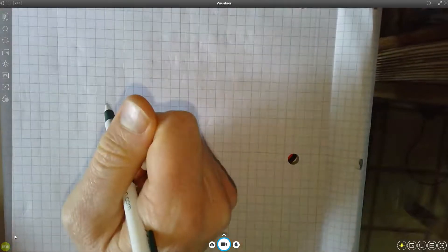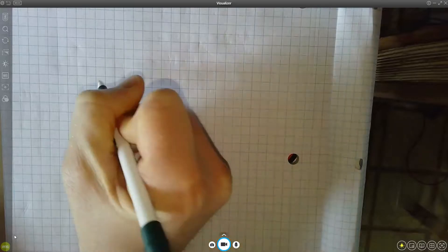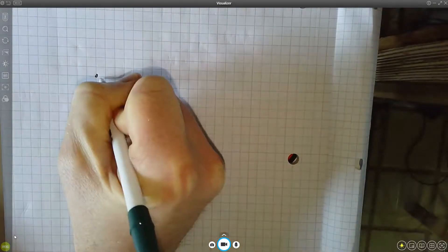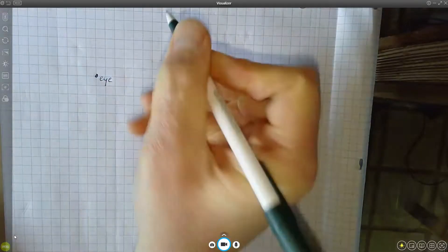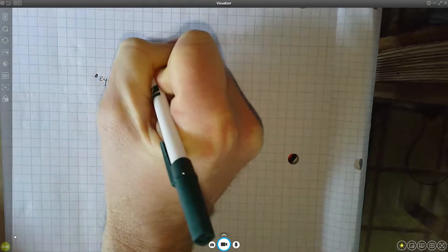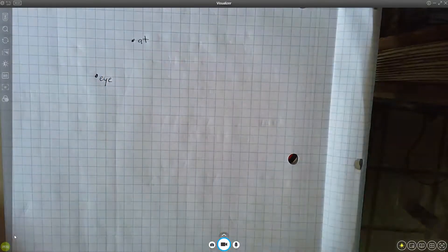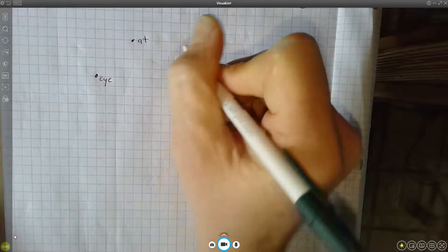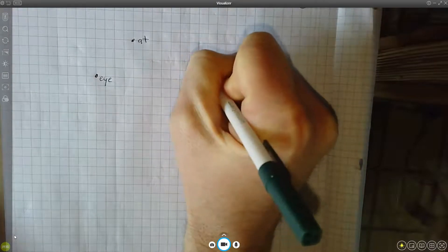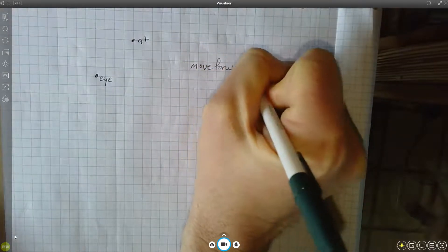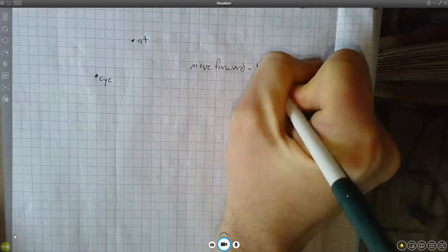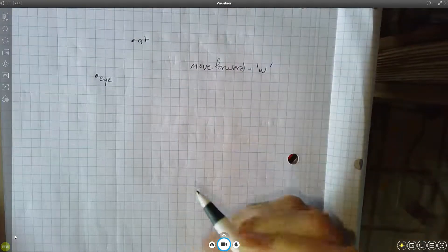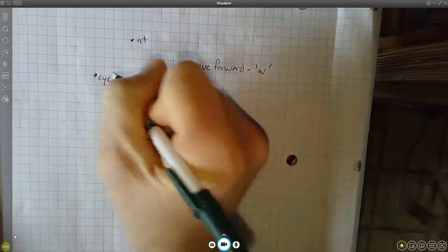So now we come to the question of how do we move in the direction that we want to move. We have some I point and we have some at point in our world, and we also have some up vector. Now we would like to be able to do something like say move forward, right, so this is bound to the W key is what we're after.